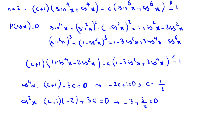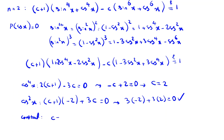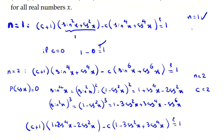Let me correct this part: 2c minus 3c gives -c, so c + 2 = 0, meaning c = 2. If we replace c=2: 3 times negative 2 plus 3 times 2 equals zero. Checking the constant term: c+1 minus c equals 1, which checks out. So for n=2 it is okay and c=2. For n=1, c was 0.